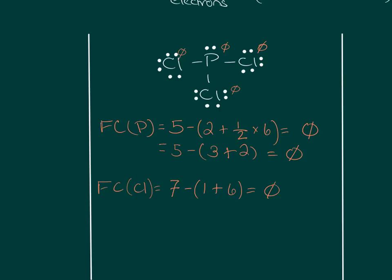What is important to realize is that the sum of the formal charges has to equal the total charge on the molecule. PCl3 is an uncharged molecule — no minus one, minus two, or plus one written with it — so the sum of formal charges must be zero. Our sum is zero plus zero plus zero plus zero, which is correct. If it had summed to anything but zero, we would have known we made a mistake.